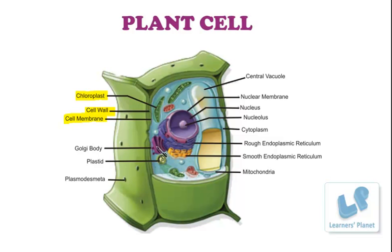The next part shown here is these stack-like tubular units arranged in the form of stacks, with some brown bodies nearby. This structure is the Golgi body, and it is easy to identify because it is present near the nucleus. The function of the Golgi body is to modify the material synthesized by the endoplasmic reticulum, store those components, and package and transport these molecules to the target site.